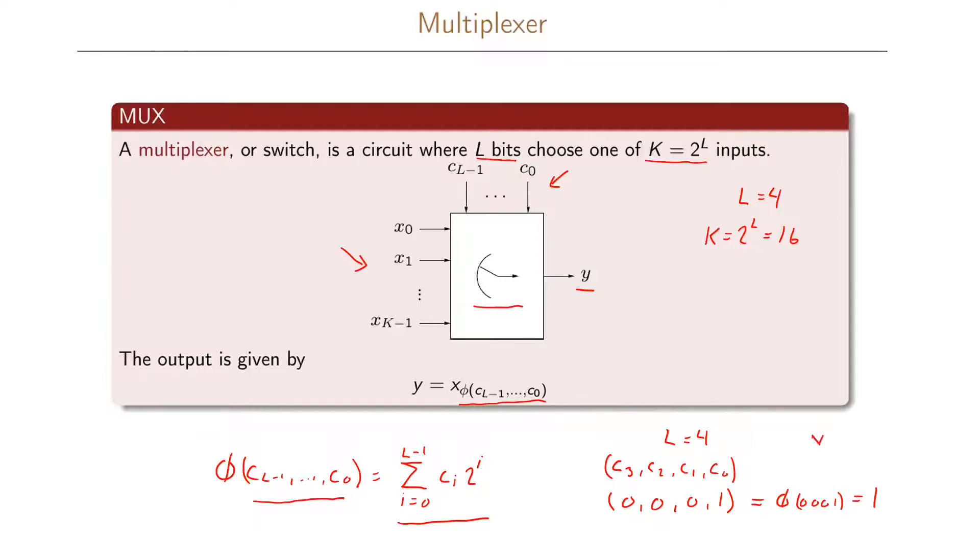In this case, y will be equal to x1. We will have a connection between x1 and y in this particular case. By changing our input vector here c, we can choose another input to map to y.